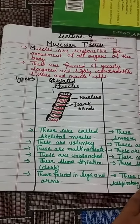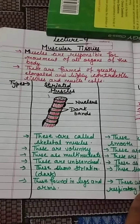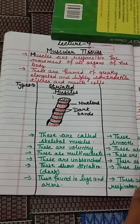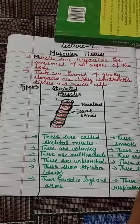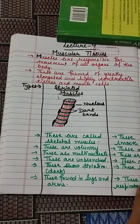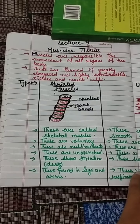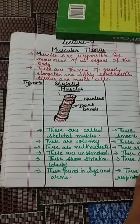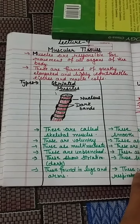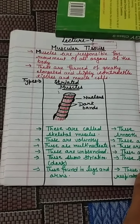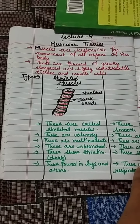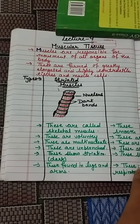Good morning everyone. Today we will start with the next topic, that is muscular tissues. Muscular tissues are present in the movement organs and are responsible for the movement of all the organs of the body. Muscular tissues have a special type of protein in them which helps in the contraction and relaxation of the muscles.